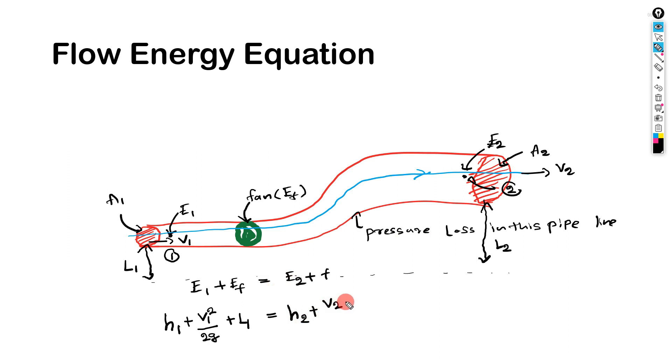So in here I forgot to add fan energy, this is EF. So this is E1, this part is E1, this part is E2. This equation is very important in static regain analysis, so please remember this equation.